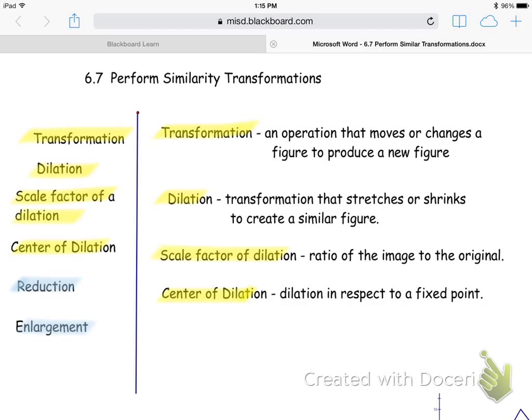So, transformation is an operation that moves or changes a figure to produce a new figure. We've done translations already. Translations actually moves the figure around the Cartesian plane. But in this case, a transformation is actually going to create a new figure. Dilation, again, you're already familiar with that. It's a transformation that stretches or shrinks, enlarges or reduces to create a similar figure.